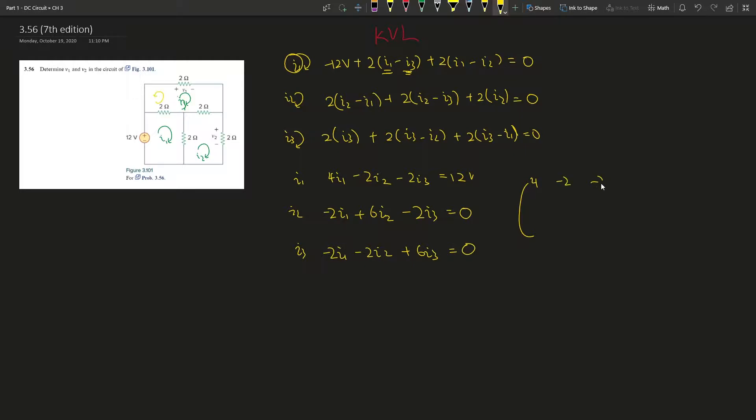So I just put this into a matrix. So negative 2, 6, negative 2, negative 2, negative 2, and 6. And this is i1, i2, i3.